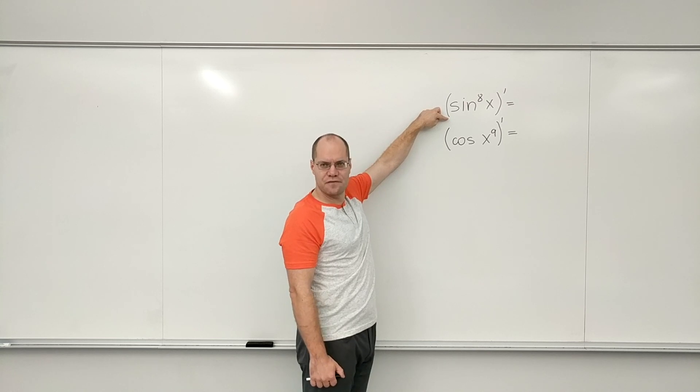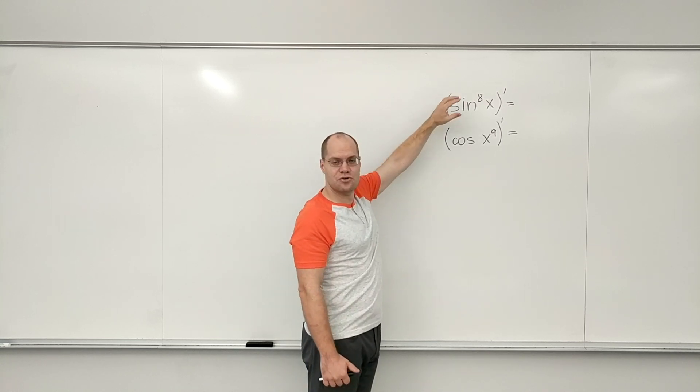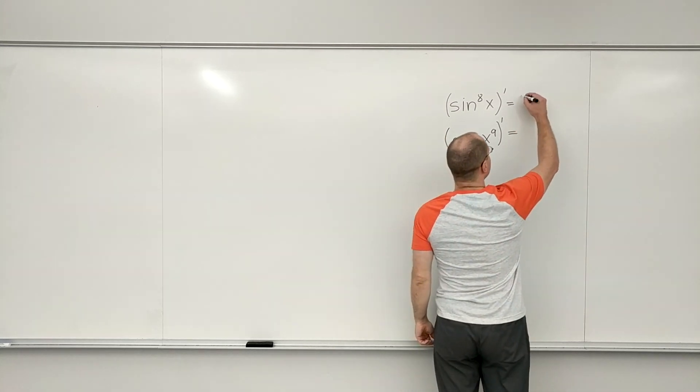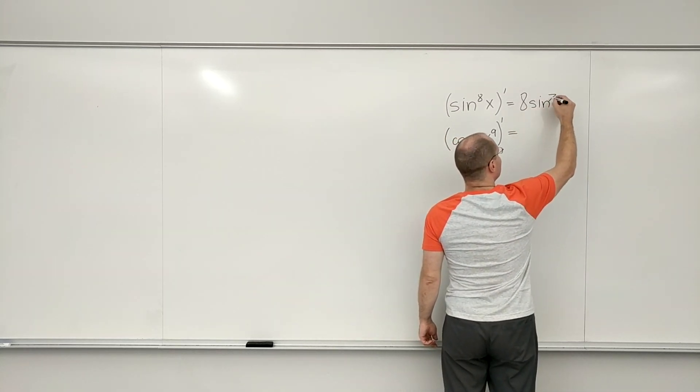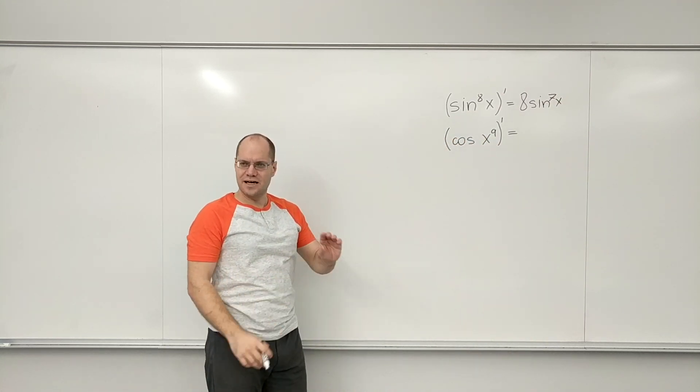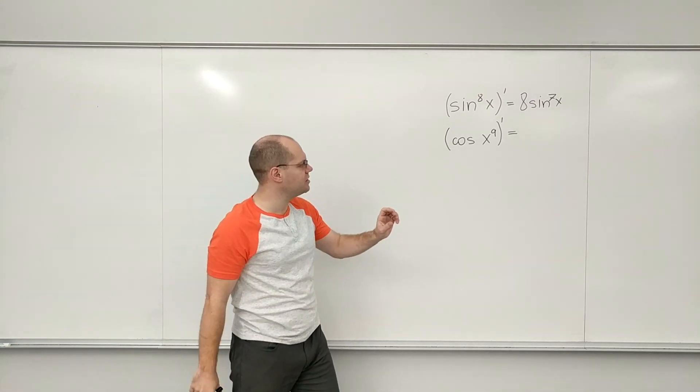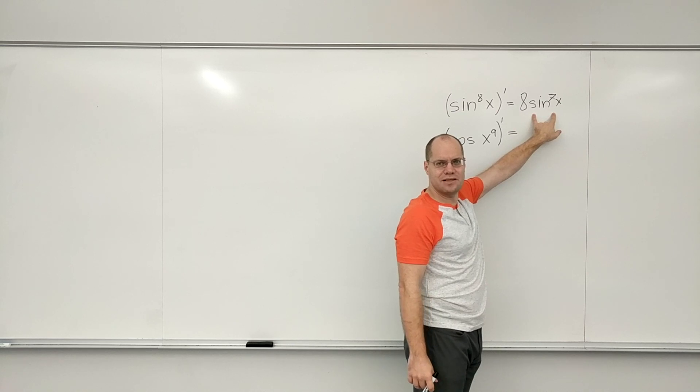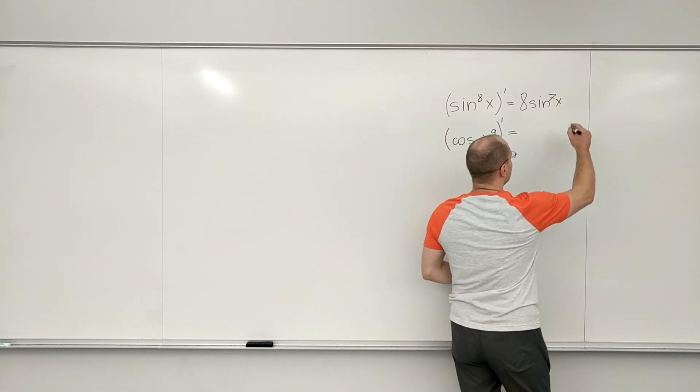Because this is a power function, we use the power law first. It's something to the eighth power, so the answer is 8 times that something to the seventh power. So we're done using the power law. We'll now chain, we'll now roll with the chain rule, times the derivative of that something. The derivative of that something was sine, its derivative is cosine.